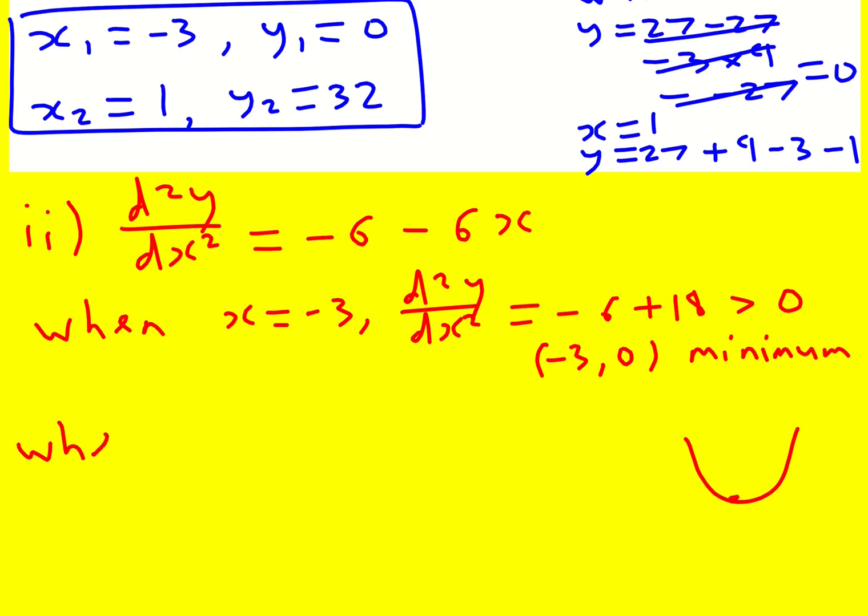And then when x equals 1, d2y by dx squared is going to be minus 6 minus 6. That's definitely going to be less than 0. So 1, 32, maximum. And that is enough explanation of what's going on.